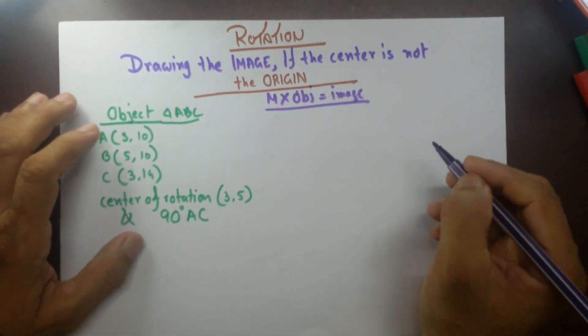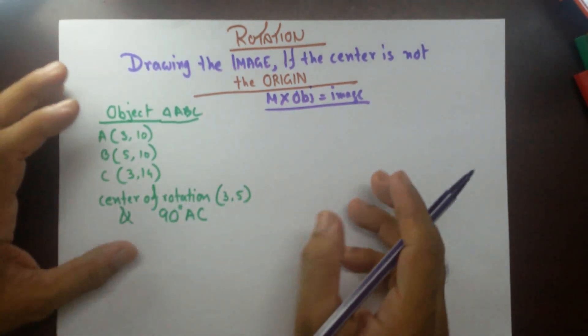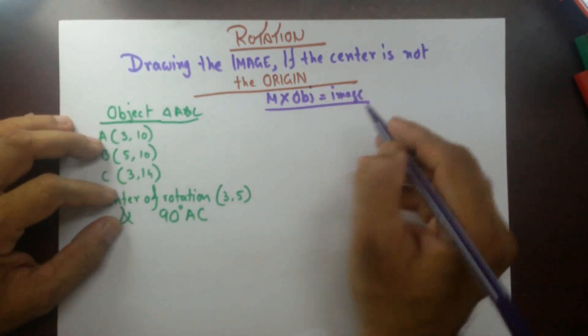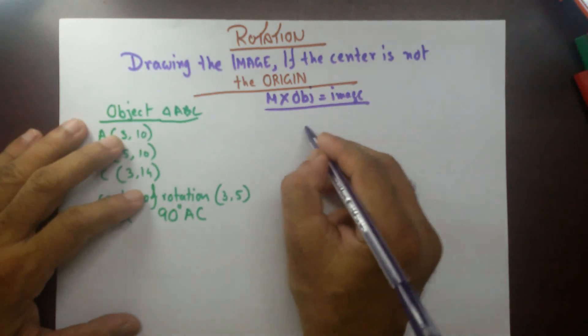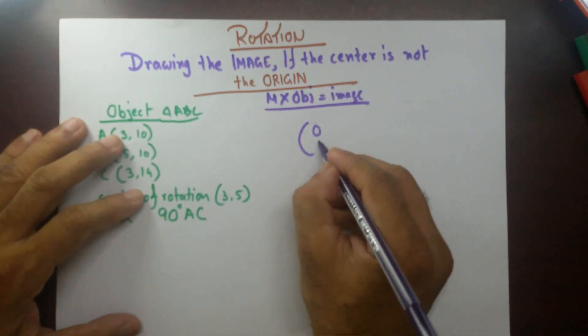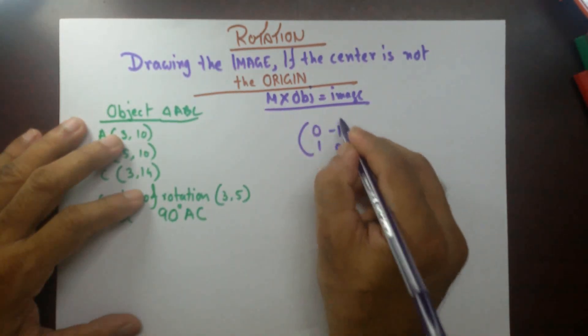I still can use it, but I have to use a trick over here. Now, matrix for 90 degree anticlockwise, the matrix is 0, 1, minus 1, 0.